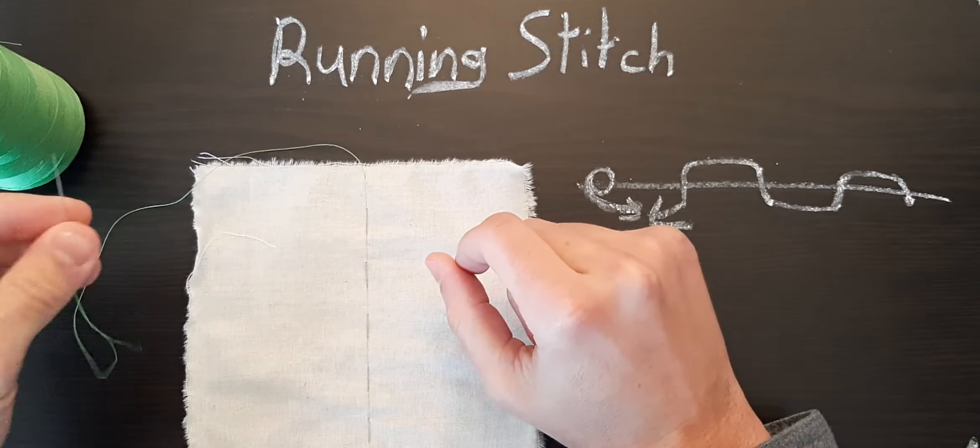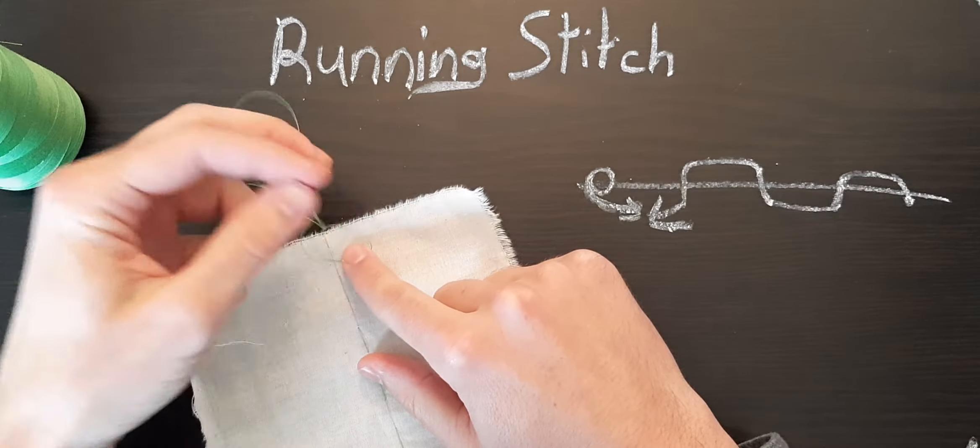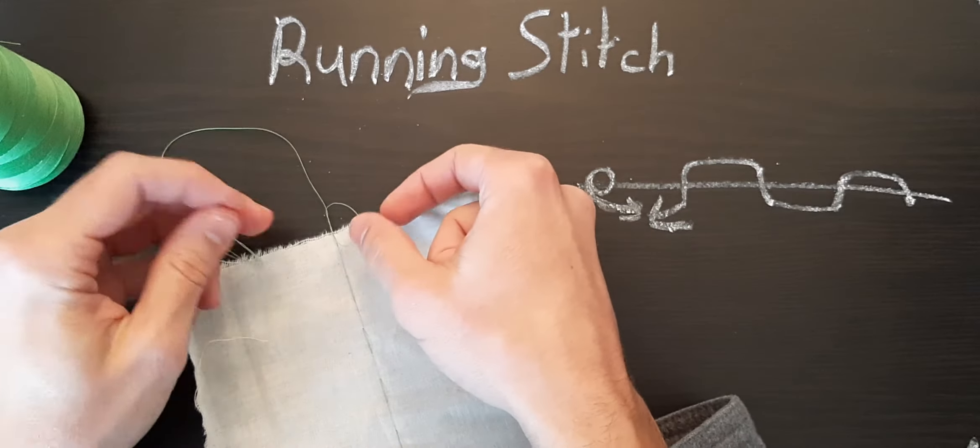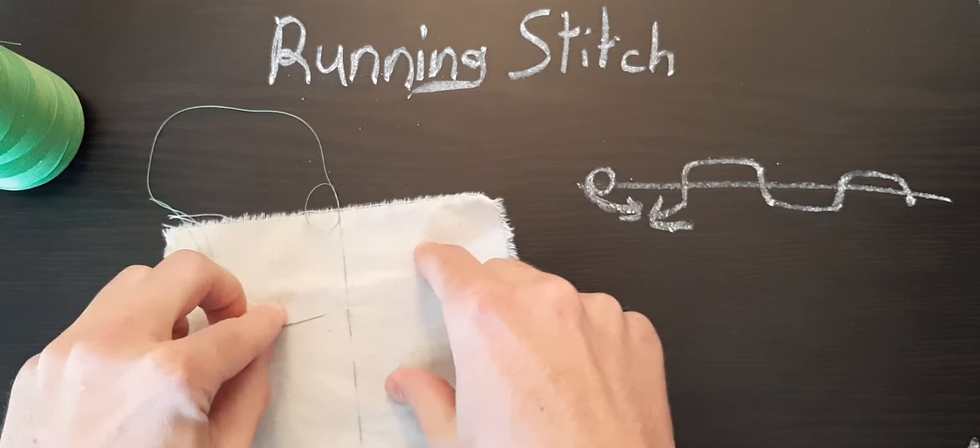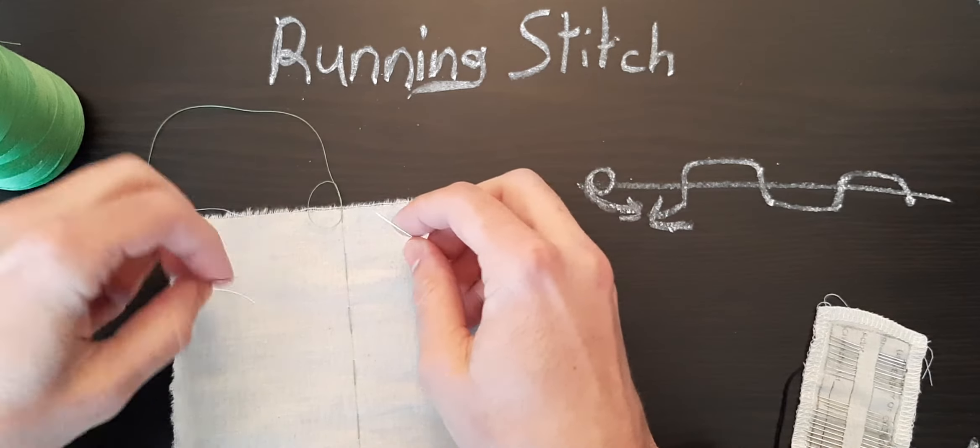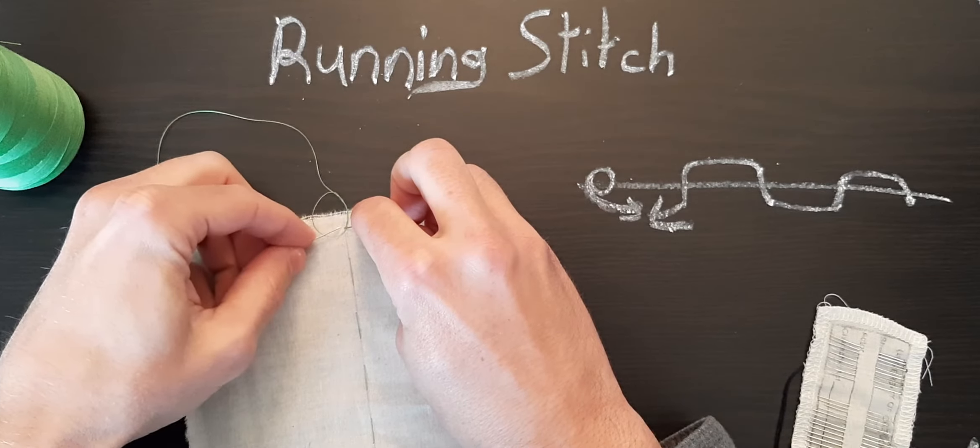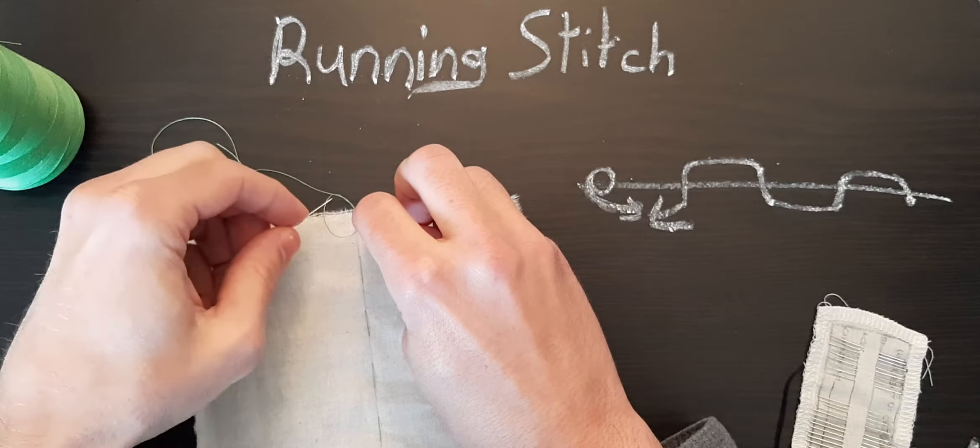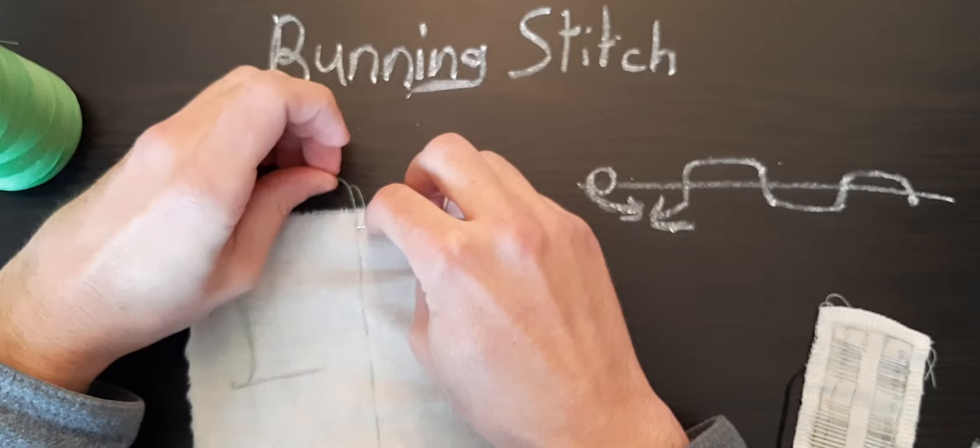So that is our running stitch. And for getting this tied off, you can do it where you just create a loop right here, going through the loop once, going through the loop twice, and to help keep it right next to the fabric there, rather than just pulling it up and the knot's going to want to travel further up the thread, you can reach into your kit and pull out just one of the straight pins. And you can use that if you stick the point through the loop and hold the point right where the thread comes out of the fabric. You can use that as a guide for your knot to keep it nice and snug against the fabric.